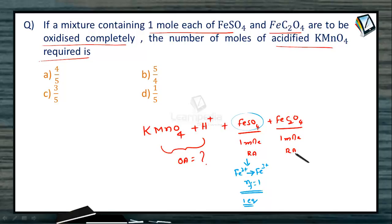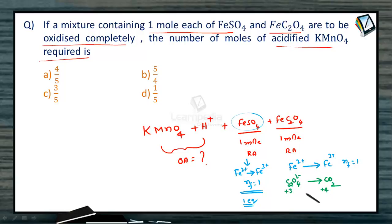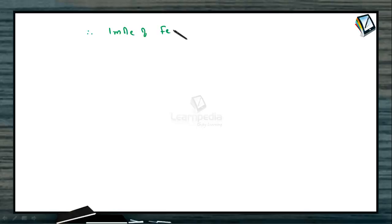For ferrous oxalate: Fe²⁺ gets oxidized to Fe³⁺ with an N-factor of 1. But for the oxalate ion, C₂O₄²⁻ gets oxidized to carbon dioxide during the reaction — the +3 oxidation state of carbon changes to +4. The change is 1, but there are 2 carbon atoms, so the N-factor for oxalate is 2. Therefore, in ferrous oxalate, the total N-factor is 1 + 2 = 3. So 1 mole of ferrous oxalate corresponds to 3 equivalents.